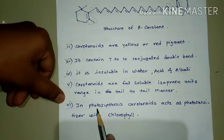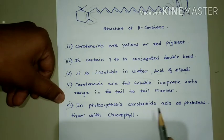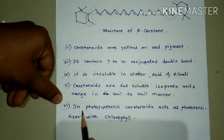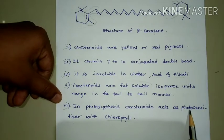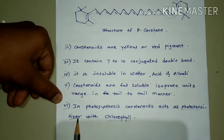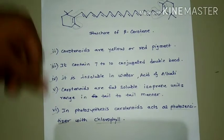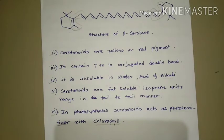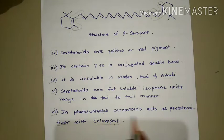The sixth point is: in photosynthesis, carotenoids act as a photosensitizer with chlorophyll. As we know, in green plants chlorophyll is present. The role of carotenoids is as a photosensitizer — a photosensitizer is a molecule that converts photochemical reactions into another form. So the photosensitizer has a very important role in the photosynthesis of carotenoids.